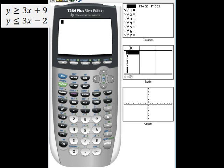To graph the linear inequalities we're going to start by pressing y equals and we're going to enter each inequality into this screen. So the first one was y is greater than or equal to 3x plus 9, we're inputting the slope-intercept form version, and the second one was y is less than or equal to 3x minus 2.